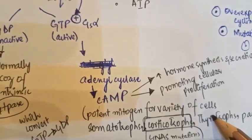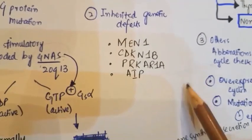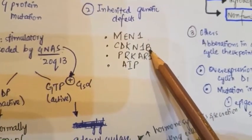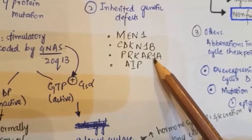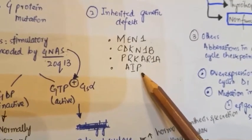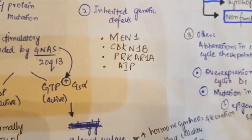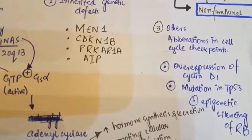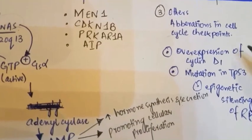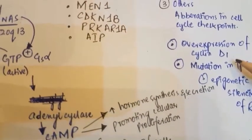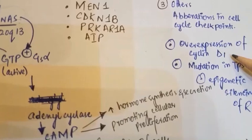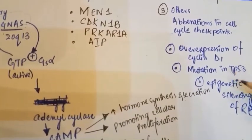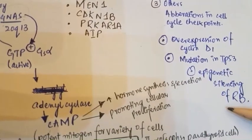There are also other inherited genetic defects, including MEN1, cyclin-dependent kinase 1B, PRKAR1A, and IIP. There are also other aberrations in cell cycle checkpoints, such as overexpression of cyclin D1, mutation in the tumor suppressor gene TP53, or epigenetic silencing of retinoblastoma.